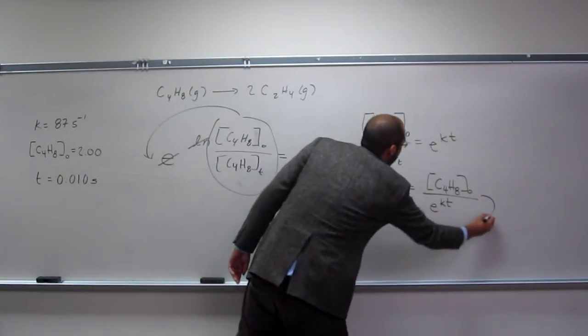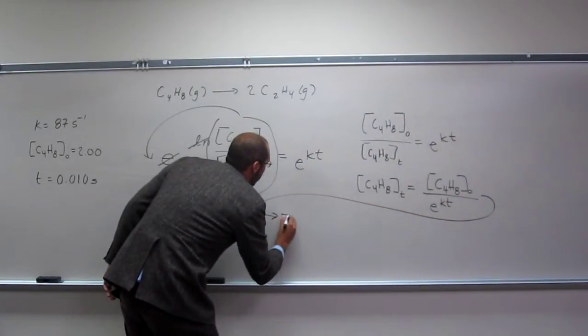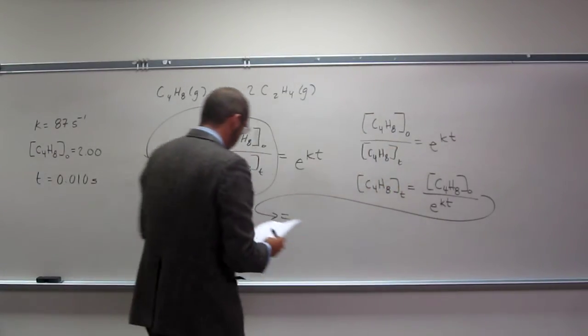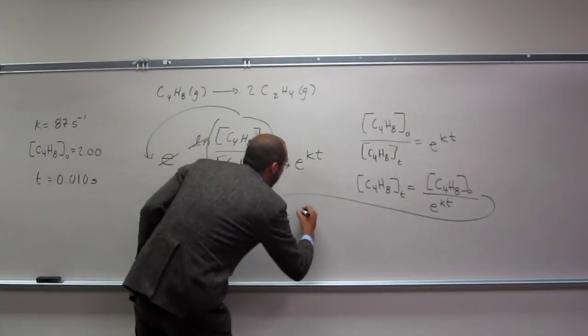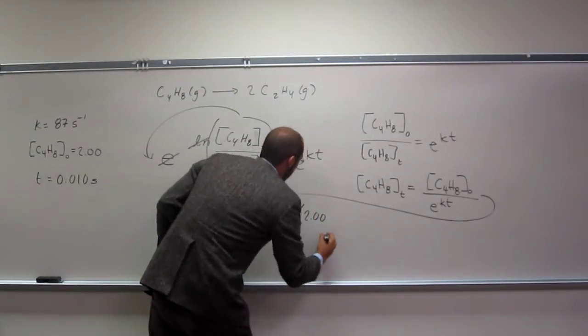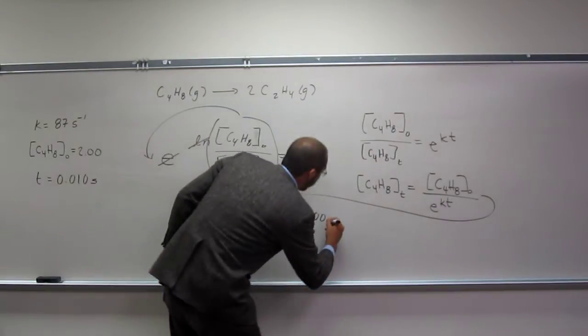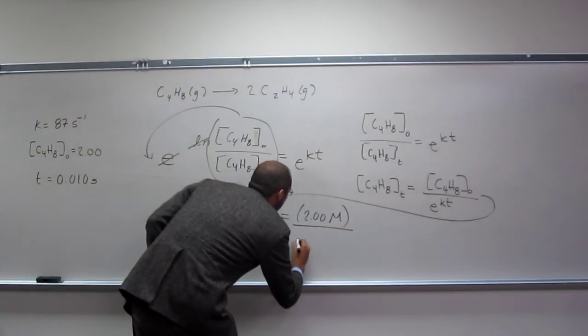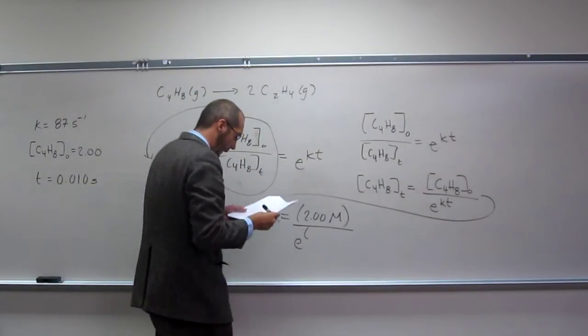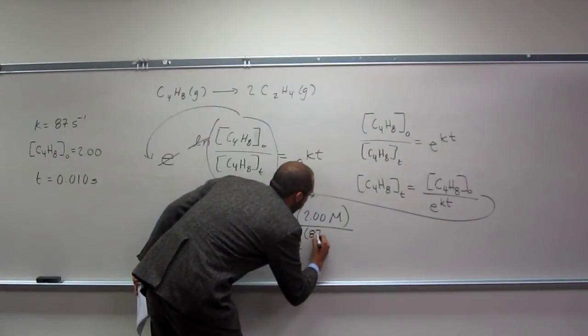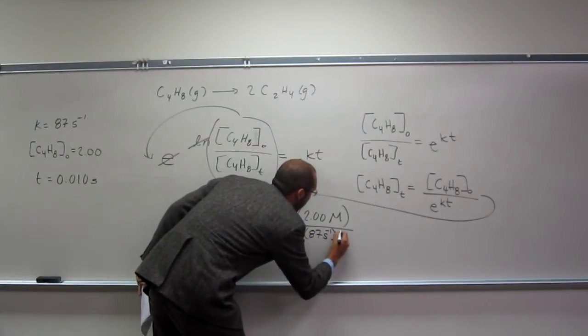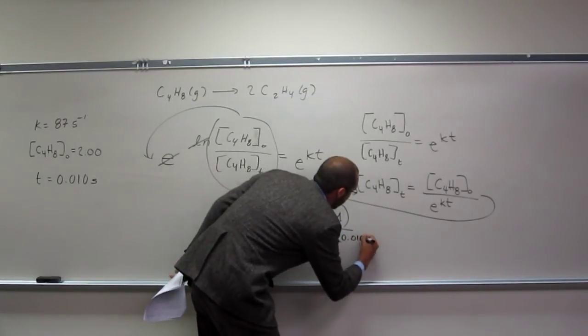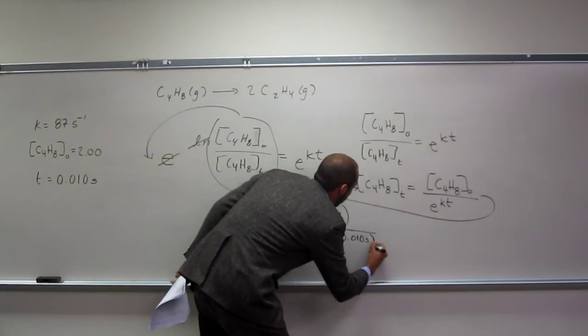Wonderful. So, let's go over here with it and just plug and chug now. So, 2.00 molar divided by E, so the K is 87 per second times 0.010 seconds, like that.